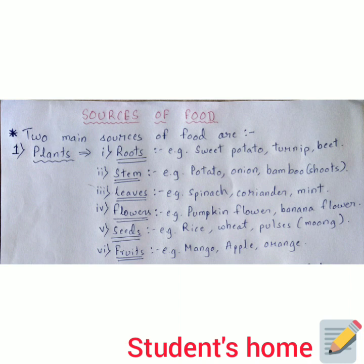The third point is leaves. The examples given are number one spinach, number two coriander, and number three mint. We are all familiar with these three leaves that are edible and are also good for health.